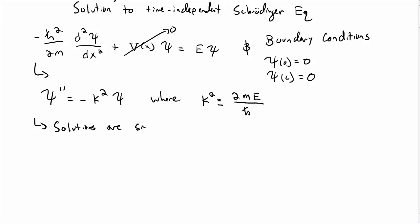Solutions to this ordinary differential equation are sines and cosines, as you can easily check or derive. So ψ(x) is A sin(kx) plus B cos(kx). In principle we could have both sine and cosine, and we need to figure out what the constants A and B are.